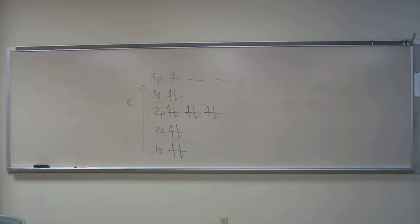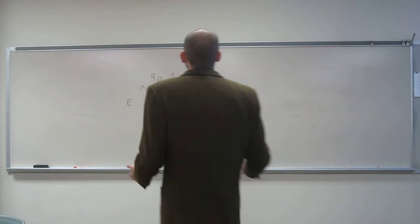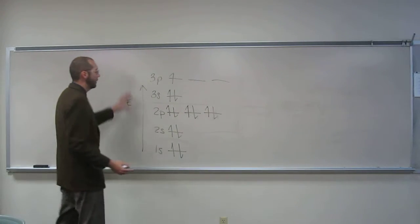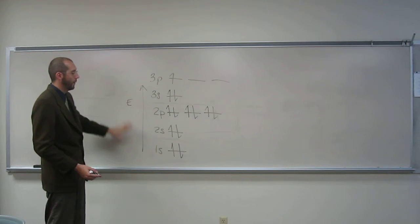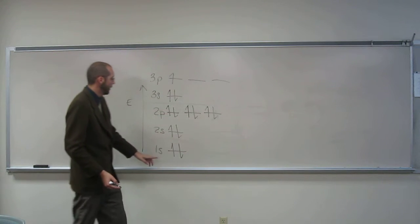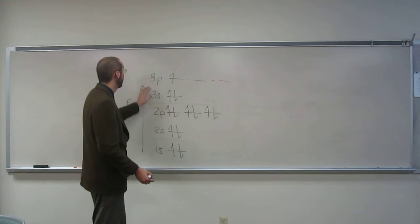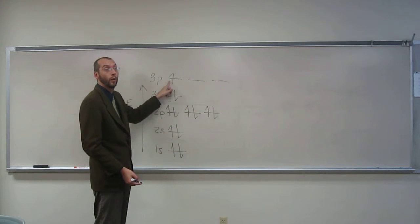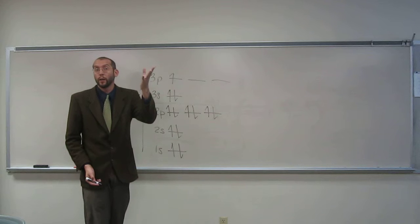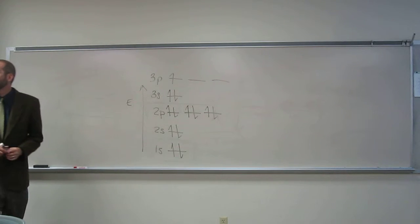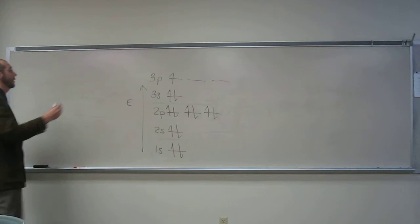Okay guys, so we just built this electron configuration for an atom that we took off the periodic table. Which one is this electron configuration for? Aluminum. And how do I know that? I can count the number of electrons here or I can look at the 3p and say there's one electron in it, so I can look up there and see that aluminum has that electron configuration. So this is aluminum.